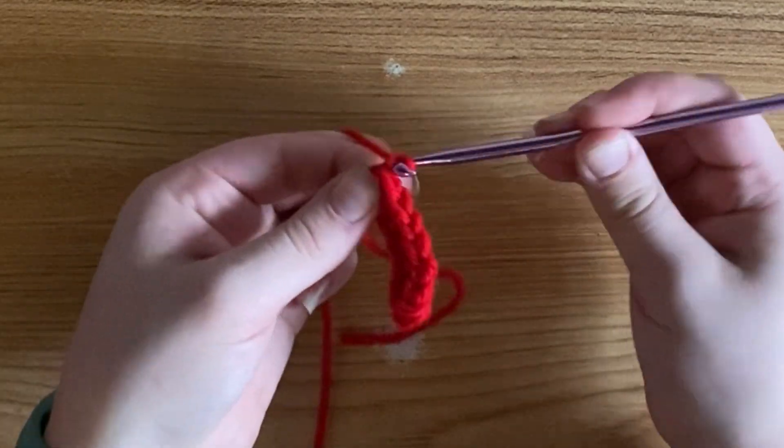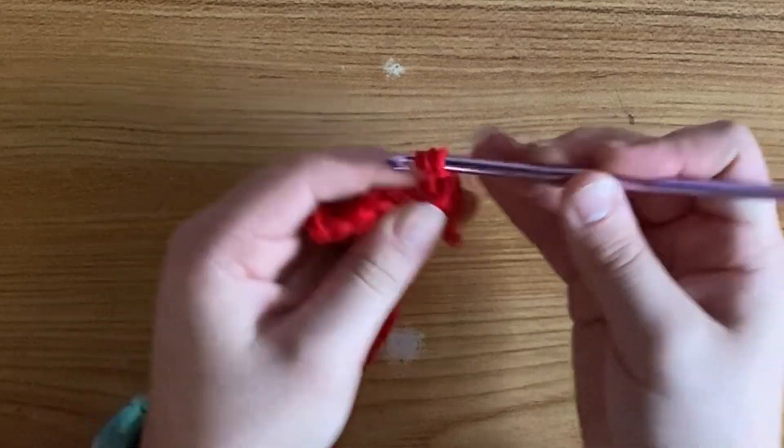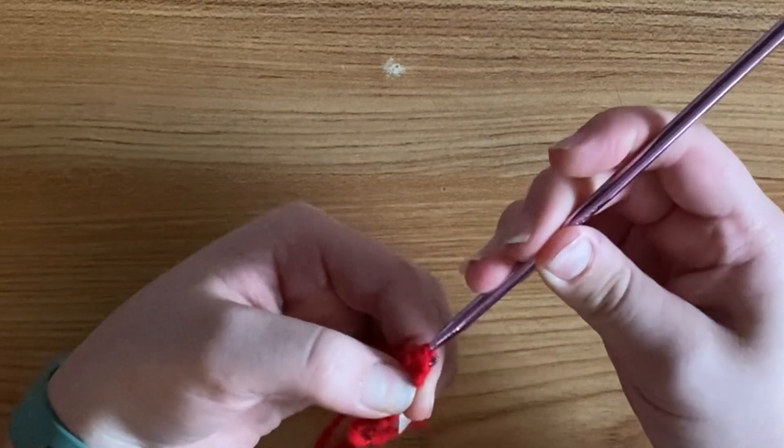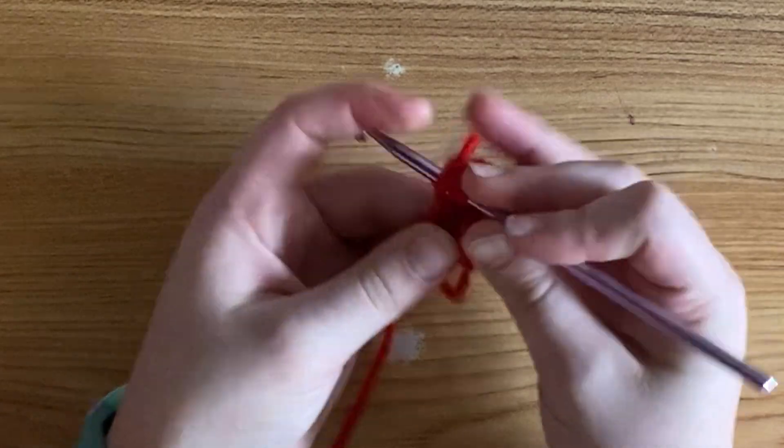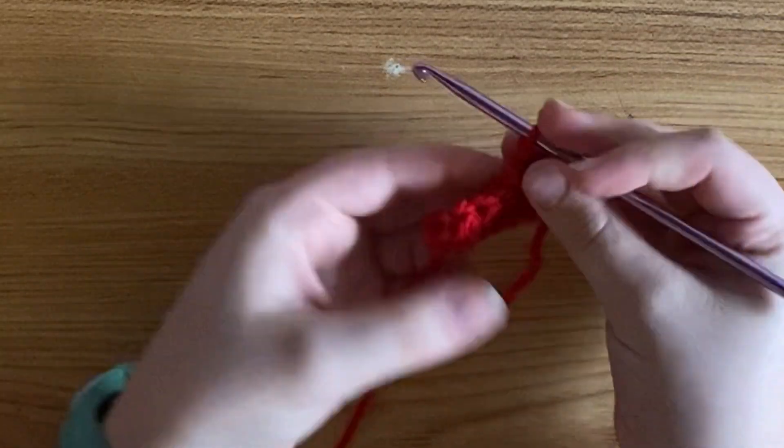Alright, to begin your next row, chain 1 and turn your work. Beginning in the first stitch, make a half double crochet and then make one half double crochet in every stitch. After this row, you're going to do this same thing for two more rows. You'll have four rows by the end of your project.